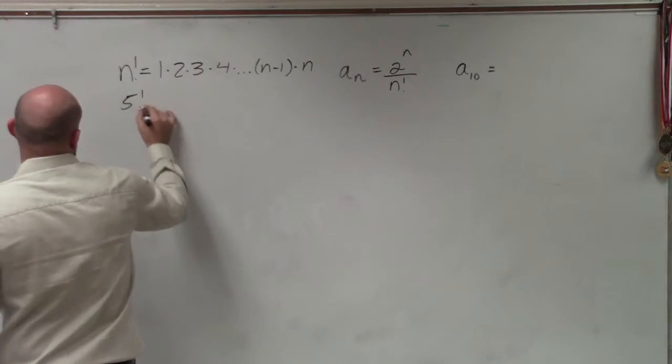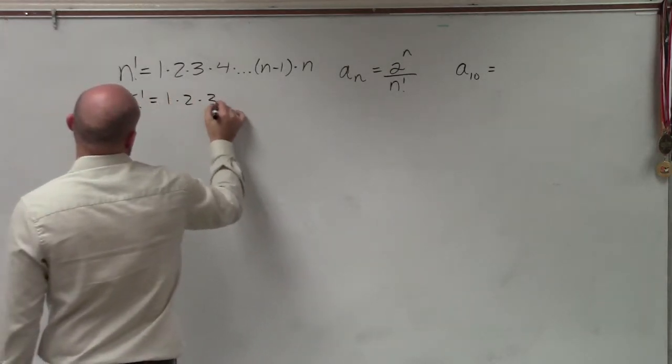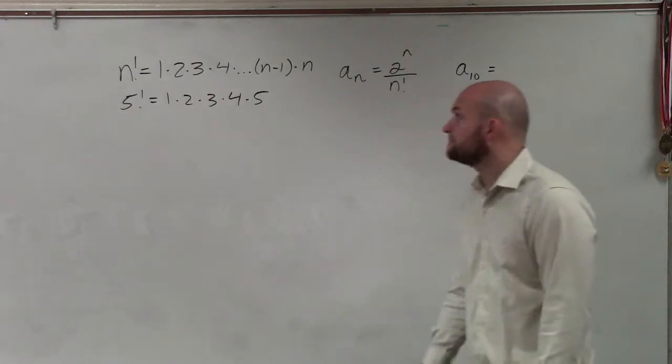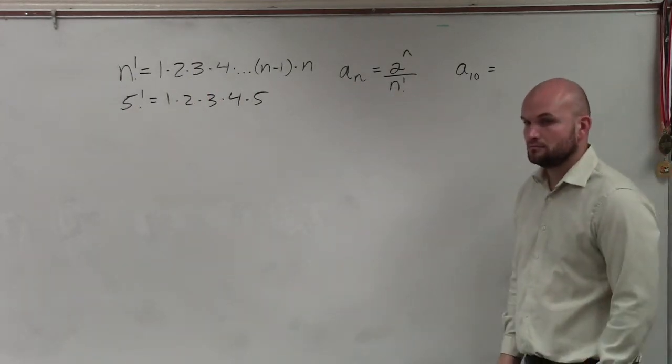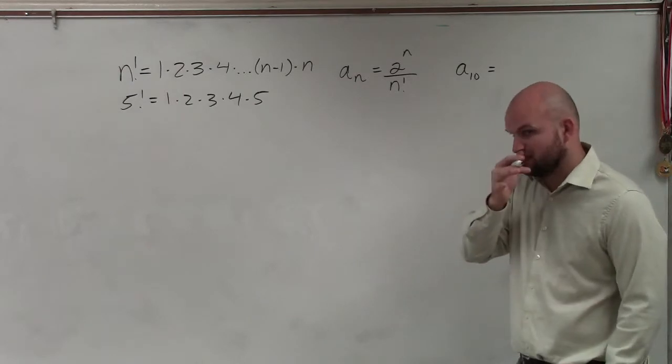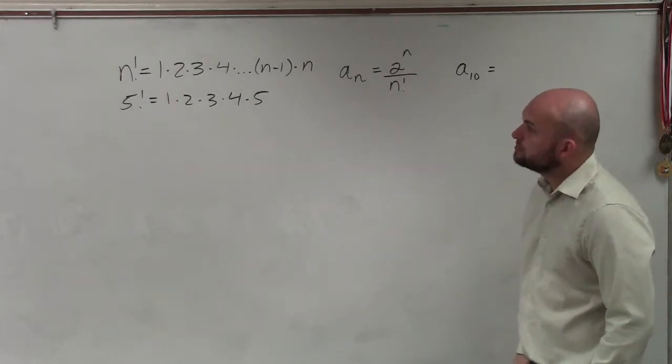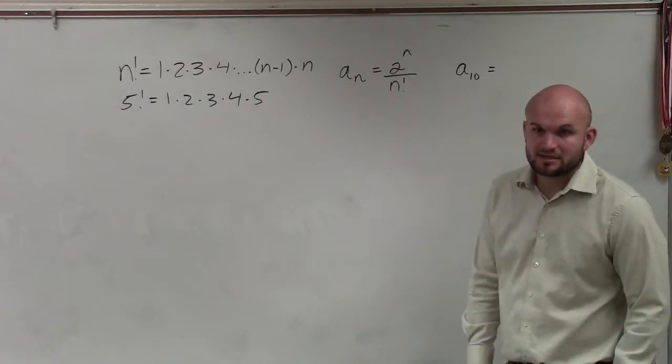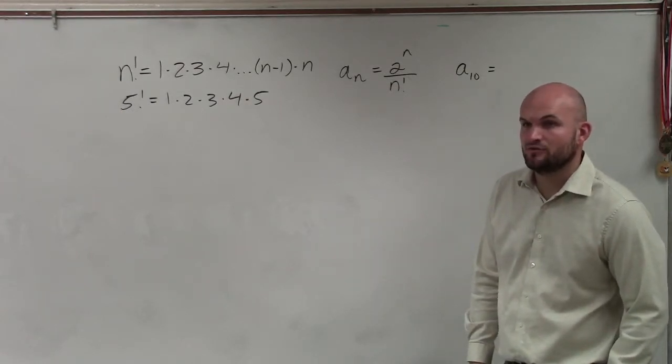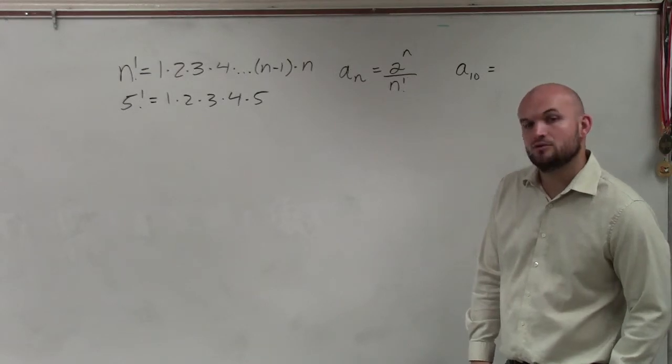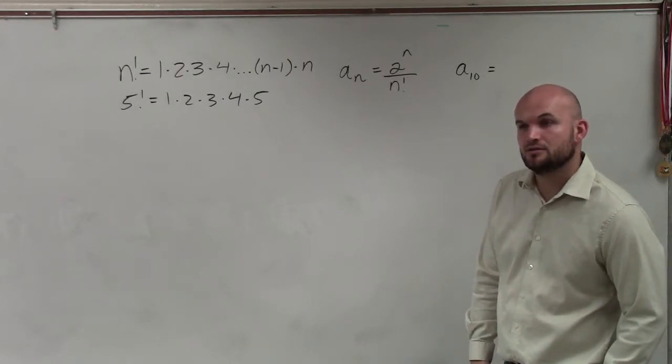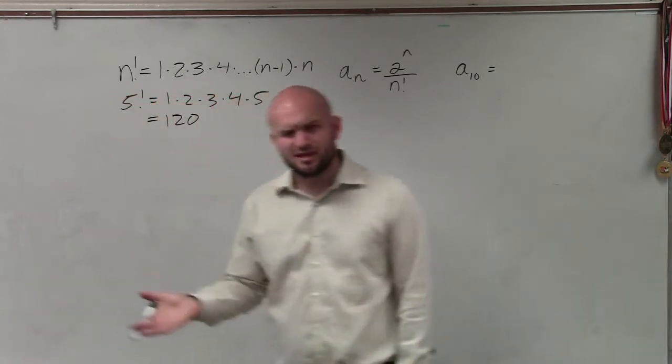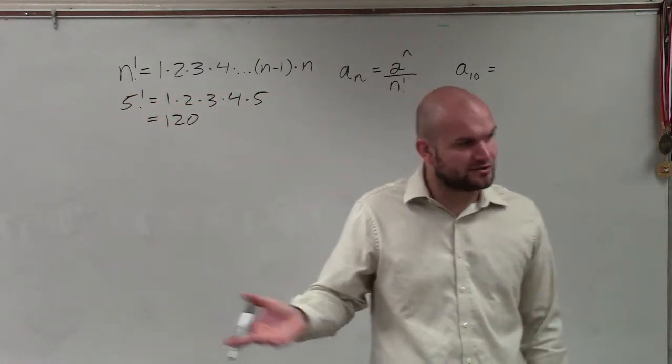For instance, 5 factorial equals 1 times 2 times 3 times 4 times 5. So we have 1 times 2 times 3 is 6, times 4 is 24, times 5 is 24 times 5, which would be 120. So that would be your value. Does that make sense? That's really the basics of factorials.